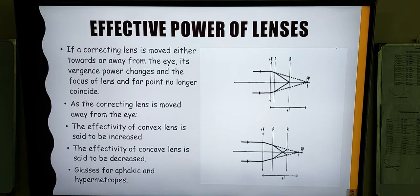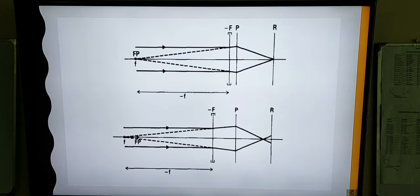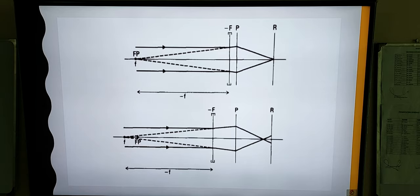Looking at this diagram, it is a case of hypermetropia corrected by the use of a convex lens. If we move the lens away from the eye, the image is displaced forward and the convergence power of the convex lens is increased. Therefore, at this distance, we will require a convex lens of lesser power for the rays of light to focus onto the retina. Similarly, in a case of myopia corrected with a concave spectacle lens, moving the lens away from the eye displaces the image forward and the effectivity of the concave lens decreases. At this position, a concave lens of higher power will be required to cause the divergence and the rays of light to focus on the retina again.